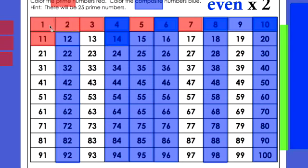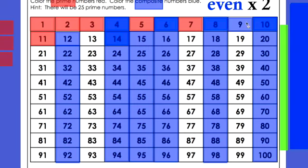So we know 1 is neither, and 3 — we know 1 times 3. Then 5: the only way to get it is 1 times 5. Seven: the only way to get it is 1 times 7. So it looks like there's a pattern with odd numbers — 1, 3, 5, 7. You would think 9, but 9 is not prime because you can get it from 1 times 9, but you can also get 3 times 3. Because there's more than one pair, that makes 9 a composite number.